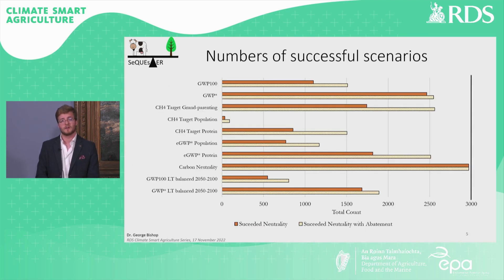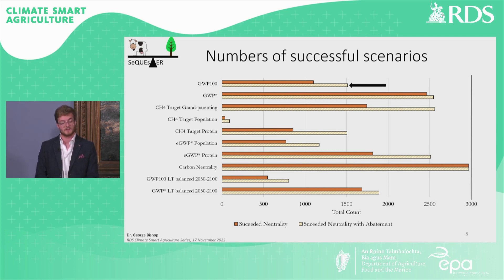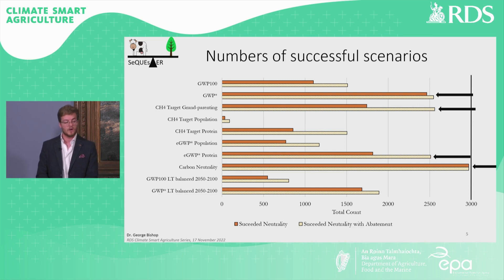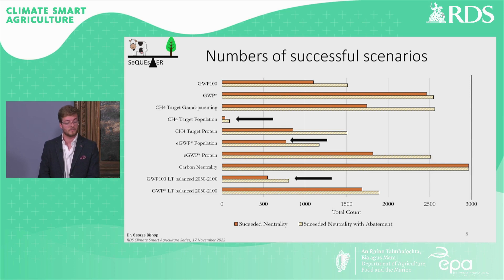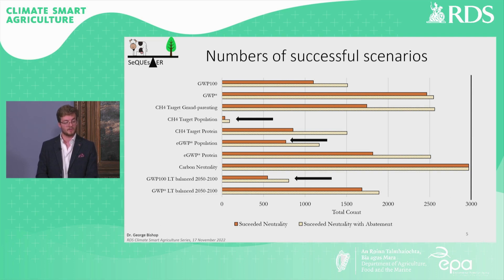As we can see here in the graph, this shows the number of successful scenarios for the 3,000 original scenarios and the number of successful scenarios for the abated scenarios in the stripes for each definition. The definitions of neutrality with large numbers of successful scenarios were GWP*, methane target grandparenting, GWP* protein and carbon neutrality. On the other hand, the definitions with low numbers of successful scenarios were methane target population, GWP* population and the long-term GWP100.